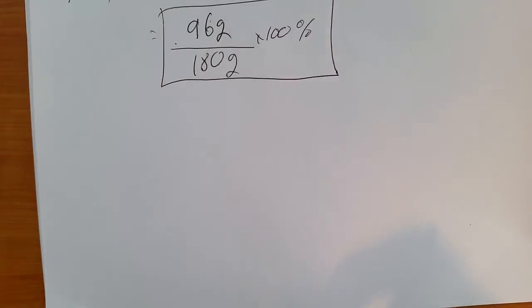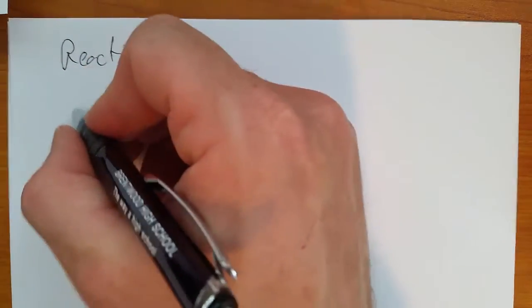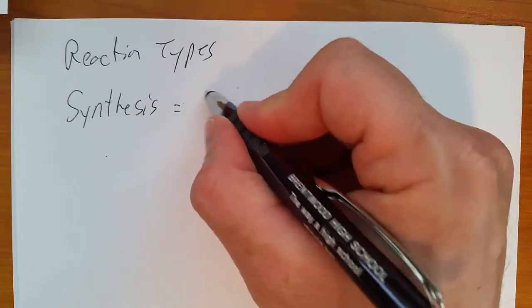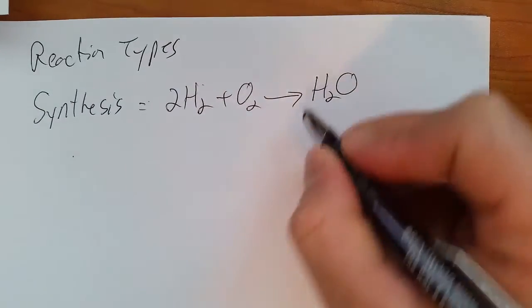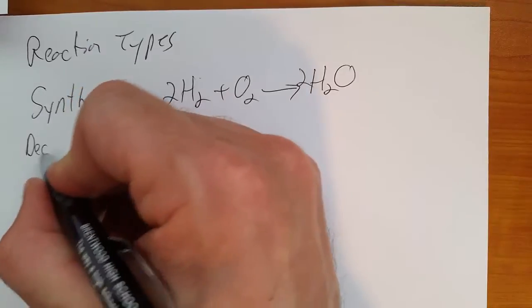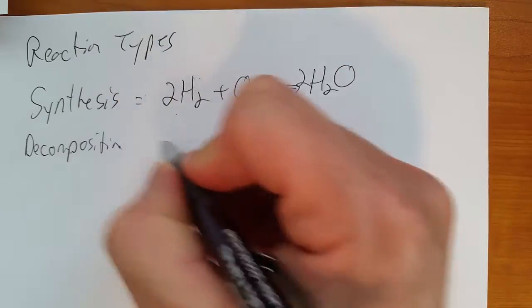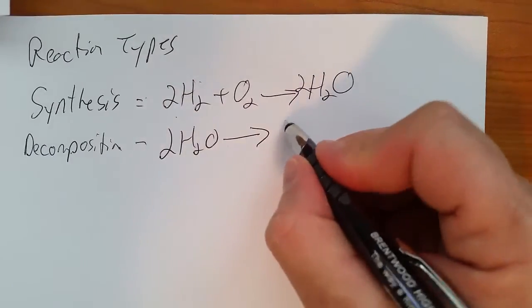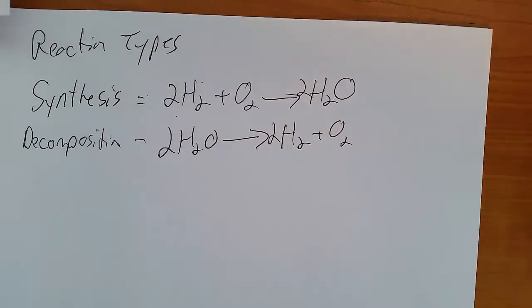Reaction types. First one is synthesis, where you have two things on the left, for example hydrogen and oxygen, making something new. It's usually going to be one thing on the right. So this would be a synthesis reaction. We have a decomposition reaction. It would be the opposite, where we'd have one thing on the left, so 2H2O. If you put an electric current through it, you're going to get hydrogen and oxygen. So one thing on the left, two on the right, something being broken down, is decomposition.